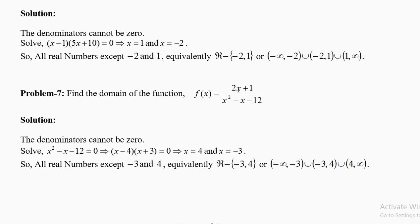Find the domain of f(x) = (2x + 1)/(x² − x − 12). Solve x² − x − 12 = 0: factor as (x − 4)(x + 3) = 0, giving x = 4 and x = −3. The domain is all real numbers except −3 and 4. Write ℝ − {−3, 4}. In interval form: (−∞, −3) ∪ (−3, 4) ∪ (4, +∞), with round brackets since −3 and 4 are not allowed.